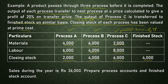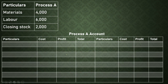Sales during the year is ₹36,000 and we have to prepare the process accounts and finished stock account. First we prepare Process A account. The format in inter-process profit comprises of particulars, cost, profit, and total on the debit side, and the same columns on the credit side. All expenses are debited in the process account.